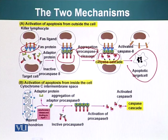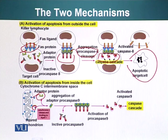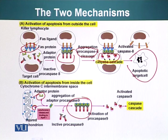Activation of apoptosis from inside the cell: cytochrome C is released and can bind adapter proteins shown here in green. These molecules aggregate, and procaspase-9 binds to them. Once procaspase-9 accumulates, the same thing happens as with the FAS pathway — these proteins are mildly proteolytic, they cleave each other off, producing activated caspase-9, which again results in apoptosis.